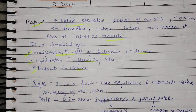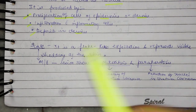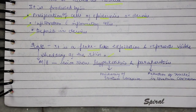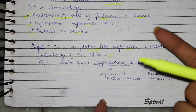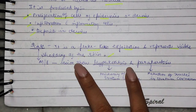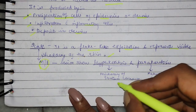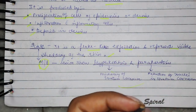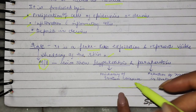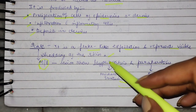Now, what is scale? Scale — looking at the definition — this is the shedding of the skin. It is a flake-like exfoliation and it represents visible shedding of the skin. Our skin cells are continuously replaced. When it is visible, it is visible in the form of scale. Now, if we look at a scale, what will you see? Hyperkeratosis. Our skin has layers of epidermis and dermis. There are five layers of epidermis; the top layer is called stratum corneum.